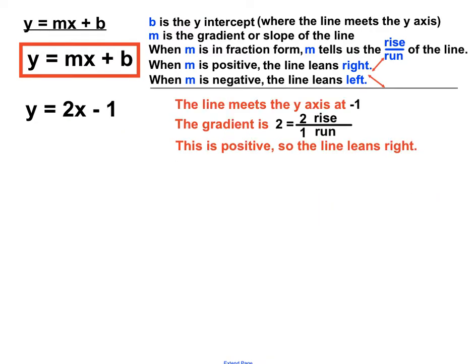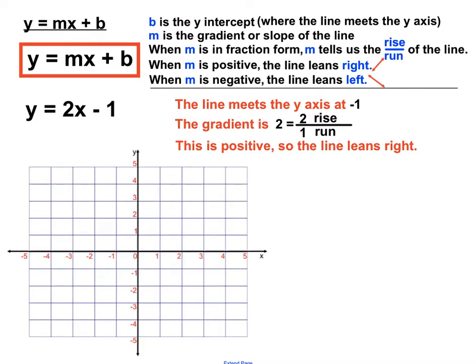So we know from our discussions that the line meets the y-axis at minus 1. We also know the gradient is 2 and it rises 2 for every 1 it goes across. And the line is positive, so leaning to the right is the situation for this line. So step 1, to position this on the number plane, let's start with the y-intercept.